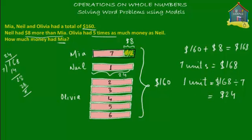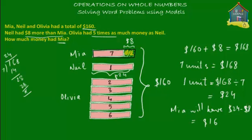If Neil has got $24, then Mia will have $24 minus $8, because Mia has got $8 less than Neil, or Neil has got $8 more than Mia. So Mia will have $24 minus $8, which is $16. So the answer to the question — how much money had Mia — is $16.